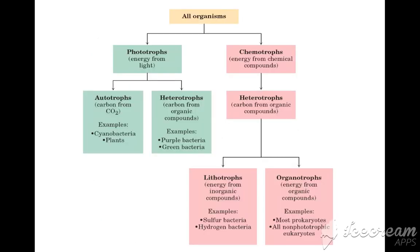All organisms are divided into two types: phototrophs and chemotrophs. Phototrophs are those which get their energy from light. Phototrophs are further divided into two groups: autotrophs and heterotrophs. Autotrophs have carbon sourced from carbon dioxide — examples are cyanobacteria and plants. Heterotrophs get their carbon from organic compounds, such as purple bacteria.